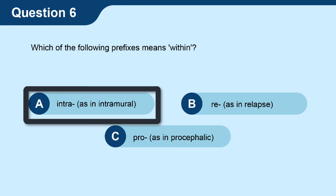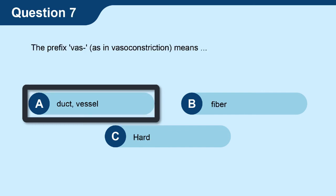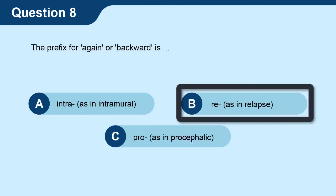Question 6, which of the following prefixes means within? The answer is A, intra as in intramural. Question 7, the prefix vas as in vasoconstriction means A, duct, vessel. Question 8, the prefix for again or backward is B, re as in relapse.